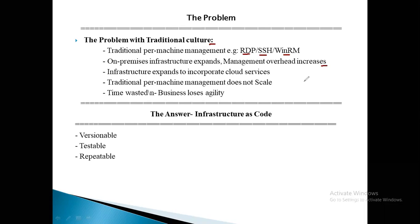On-premises infrastructure expands and management overhead increases. If you are working with a 3-node cluster, it is easy to maintain. But if the cluster grows and you need more servers — say 300 or 3000 nodes — it becomes very painful for the organization to manage. You need space, routing, switching, a dedicated team for infrastructure, and a dedicated team for security.